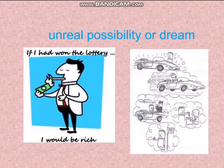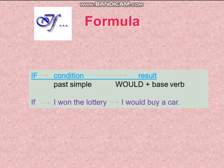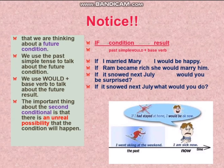The next is unreal possibility or dream. For example: if I had won the lottery, I would be rich. We are going to talk about the second conditional — it means unreal possibility or dream. The second conditional is like the first conditional in that we are still thinking about the future, thinking about a particular condition in the future and the result of this condition. But there is not a real possibility that this condition will happen. For example, you do not have a lottery ticket — is it possible to win? No. No lottery ticket, no win. But maybe you will buy a lottery ticket in the future, so we can think about winning in the future like a dream. It's not very real but it's still possible. Notice that we use the past simple tense to talk about the future condition, and would plus base verb to talk about the future result. The important thing about the second conditional is that there is an unreal possibility that the condition will happen.